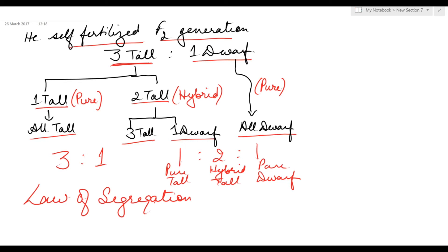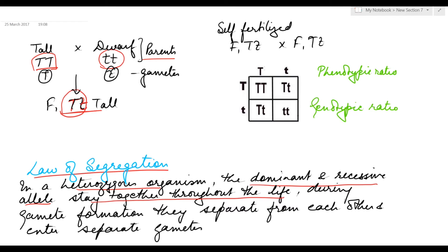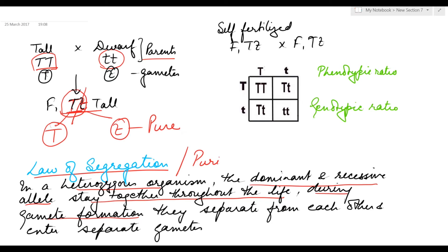After this, Mendel gave the law of segregation. He showed that pure tall (represented as capital T) and pure dwarf (represented as small t) are taken as parents and crossed to get tall in the F1 generation. The law of segregation states that in a heterozygous organism, the dominant and the recessive allele will stay together throughout life without mixing. During gamete formation, they will separate from each other and enter separate gametes. Gametes will always be pure for a character — that is why this law is also referred to as the purity of gametes.